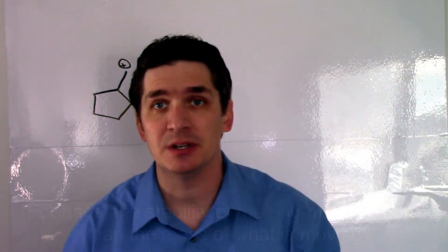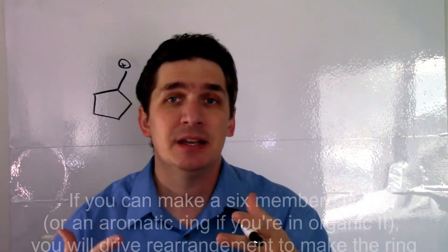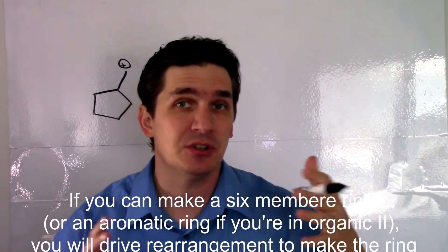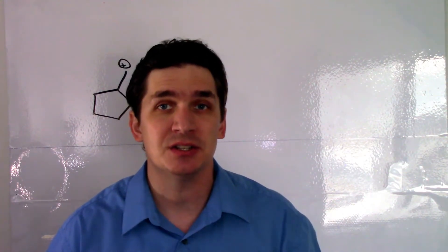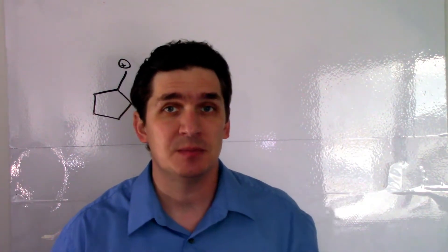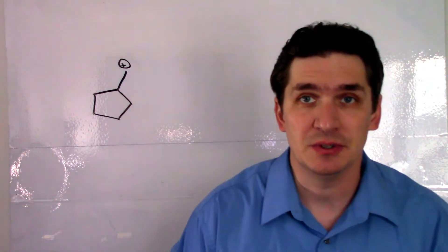Six-membered rings are the most stable rings in organic chemistry because they have geometries closest to tetrahedral carbons. And if we can take a carbocation and rearrange it in such a way that we generate a six-membered ring, we are far more likely to generate this compound.